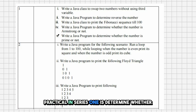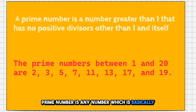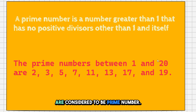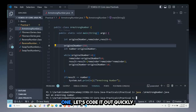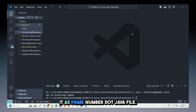The fifth practical: determine whether a number is prime or not. A prime number is any number greater than 1 that has no positive divisor other than 1 and itself. For example, 7 is divisible only by 1 and 7 — not by 2, 3, 4, 5, or 6. Let's code this quickly. I'll create PrimeNumber.java.